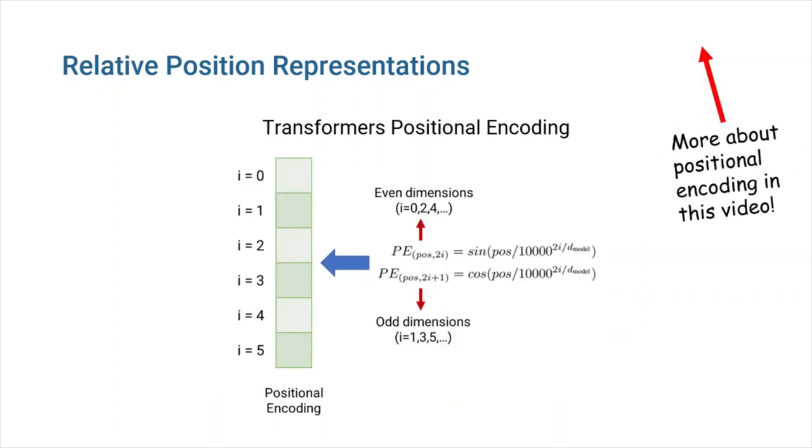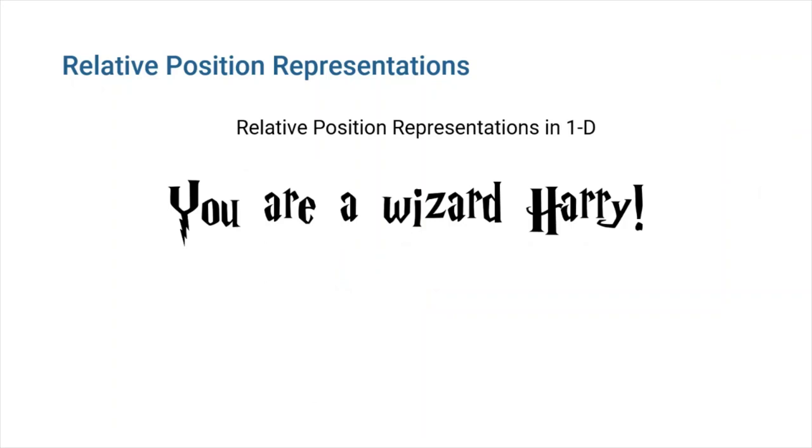Original transformer introduced in Attention is all you need used index-based positional encodings that was utilizing a sinusoidal function. Each token's index in a sentence is preserved with this method. In relative position representation method, on the other hand, only relative position matters.